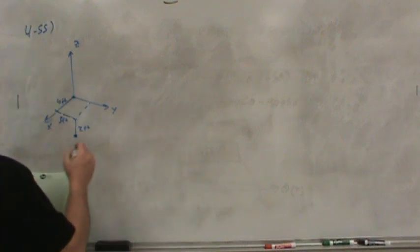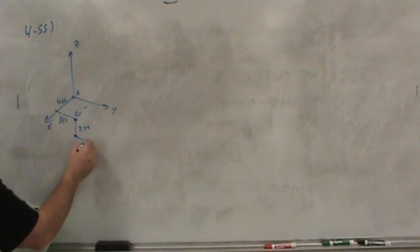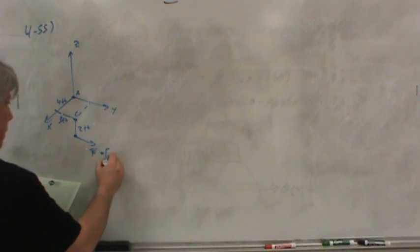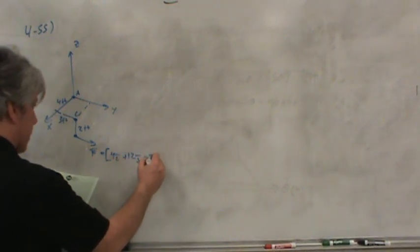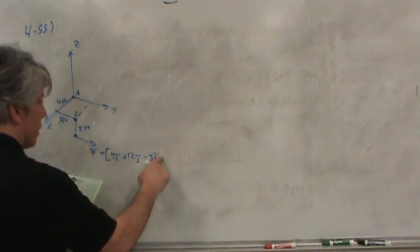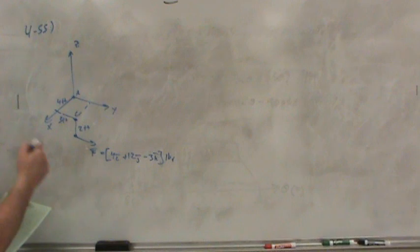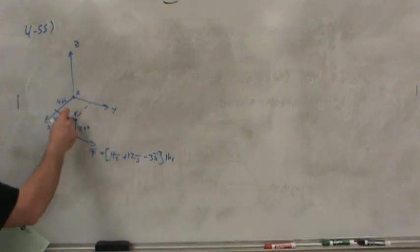What we're really interested in is the moment of the force down here, which, by the way, that force they gave us as a vector 4i plus 12j minus 3k. And these are all in pounds force. They gave us this force applied at this point. It doesn't matter if you move out here and then here or here and then here.